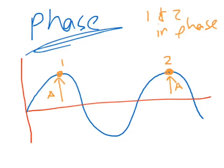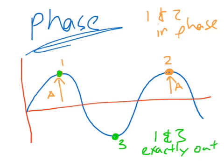Now, if we're talking about something that is out-of-phase, if we consider point 1 again, but this time we're going to consider the bottom over here, we'll call this point 3. Points 1 and 3 are exactly out of phase. So we've got in-phase, and we've got exactly out-of-phase for 1 and 3.